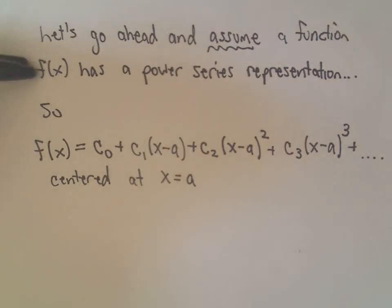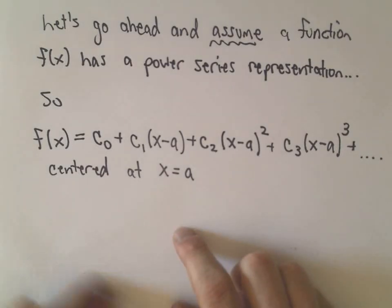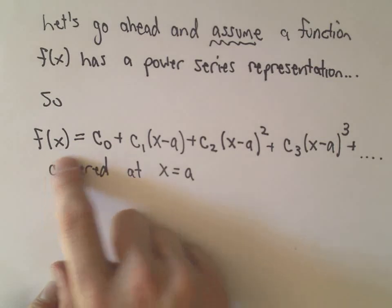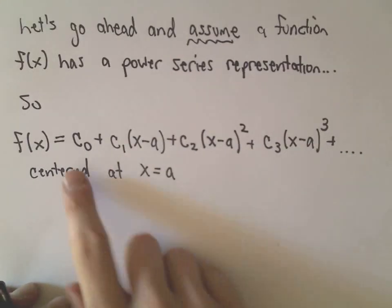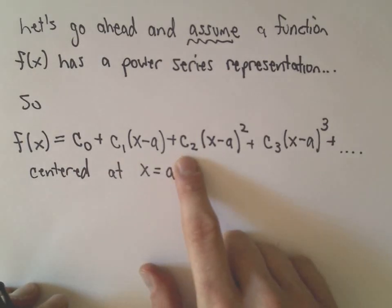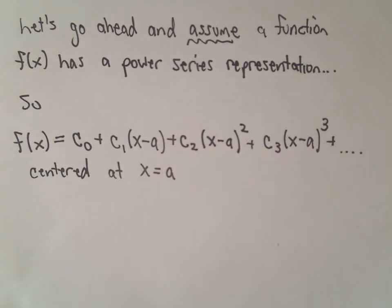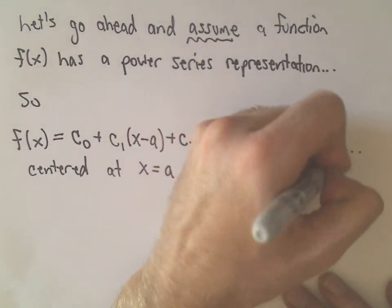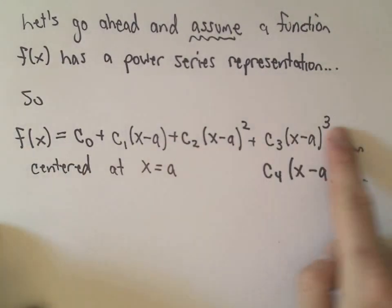In this video we're going to assume that a function f(x) does have a power series representation. A power series representation takes some function f(x) and expresses it as an infinite sum — an infinite polynomial: C₀ plus C₁ times (x minus a) to the first, plus C₂ times (x minus a) squared, plus C₃ times (x minus a) cubed, plus C₄ times (x minus a) to the fourth, and so on forever.